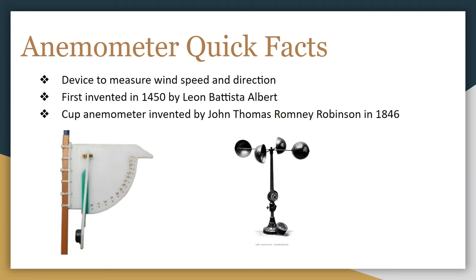As I said, anemometers are devices that are used to measure wind speed and direction. And there's a lot of different types of anemometers out there, but we're going to look at two main types today. The first anemometer is the one on the left and that was the one that was invented in 1450 by Leon Batista Albert. And that one is not as fun to look at. So the one we're going to make today looks more like the one on the right. And that's a cup anemometer. And it was invented by John Thomas Romney Robinson in 1846.